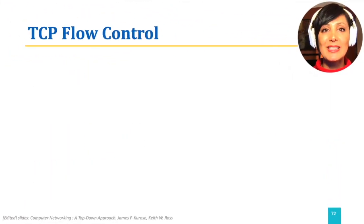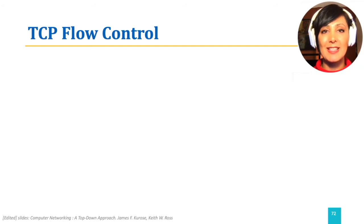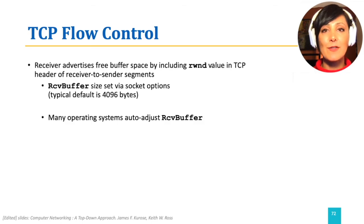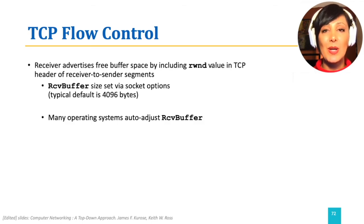TCP flow control decides the sender rate of transmission to adjust it to the buffer capacity of the receiver. To do this, the receiver advertises its free buffer space by including RWND, which is the receive window, in the segments.